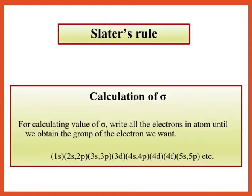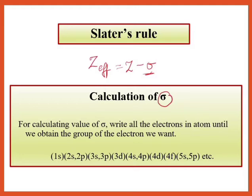So, Slater's rule — what is it? For Slater's rule we need to know what Z_effective is. Z_effective = Z − σ. So if we want to find the effective nuclear charge, we subtract the screening constant σ from the nuclear charge Z. Slater's rule is used for the calculation of σ (the screening constant).